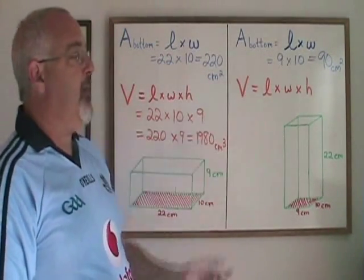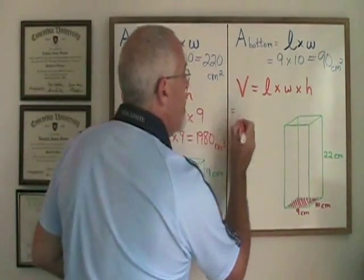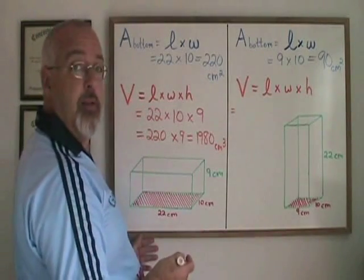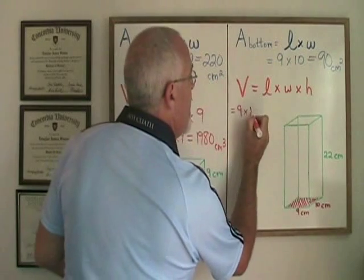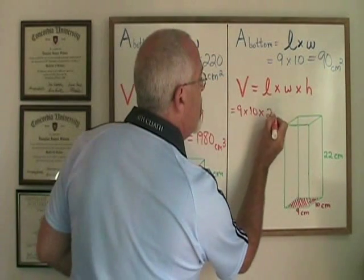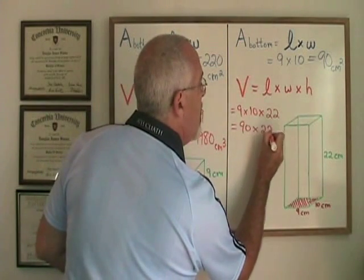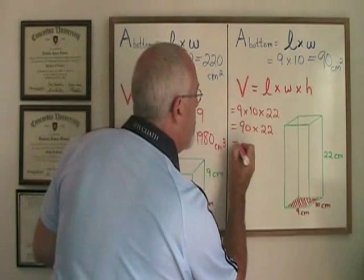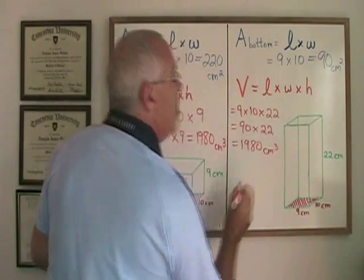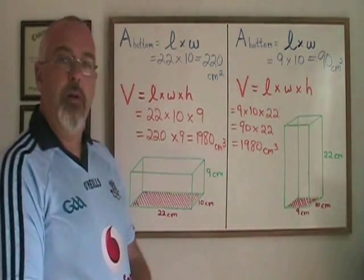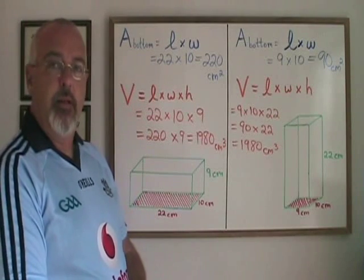If we fill in the same volume formula for this rectangular prism, we are plugging in the numbers in a different order, but we're going to get the same answer. The length of 9 times the width of 10 times the height of 22. 9 times 10 is 90. And 90 times 22 is 1980. Again, centimeters cubed.